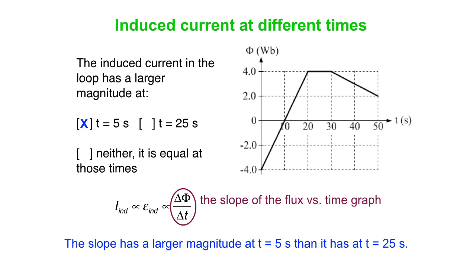Note that the value of the flux at t equals 25 is bigger and a whole different sign than the one at t equals 5. What's really relevant is what is the slope at the two points? There's no induced current at all at t equals 25 seconds because the slope is zero there.